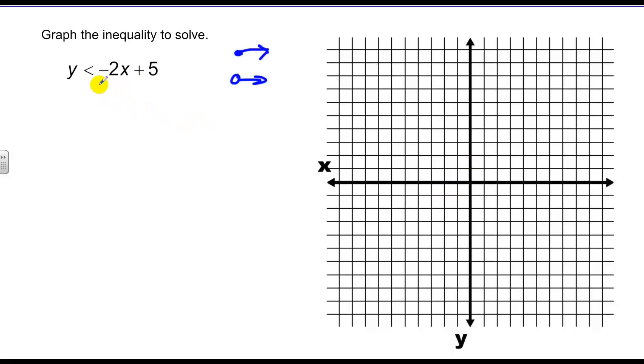If I graph y equals negative two x plus five, I'd go up to five, one, two, three, four, five, and then do a slope of down two over one. Do it a couple of times. But instead of drawing a solid line, what I do is I dot my line. That's kind of like the open circle equivalent. So you draw a dotted line.